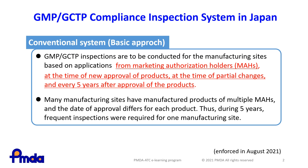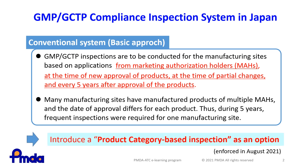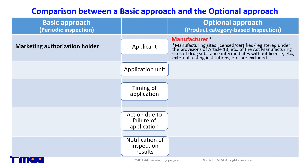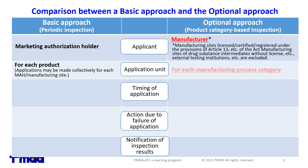Accordingly, while maintaining the conventional system, a new system has been introduced as an option from the viewpoint of international consistency. It enables selection of GMP and GCTP inspections for each manufacturing site based on applications from manufacturers, instead of periodic inspections every five years after approval by MAHs. This is a product-category-based inspection. The major difference is that the inspection applicant is a manufacturer instead of an MAH, and inspections are conducted for each manufacturing site instead of each product.